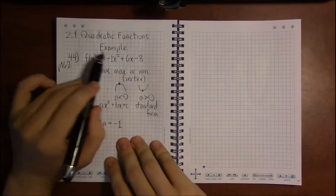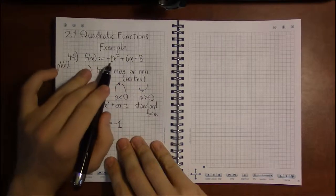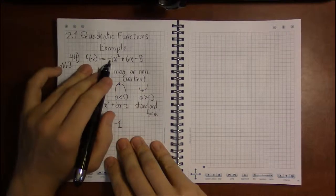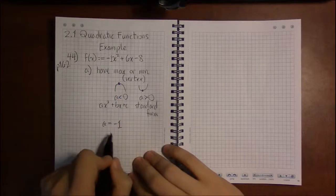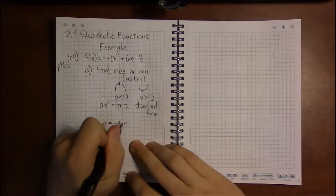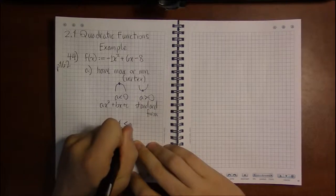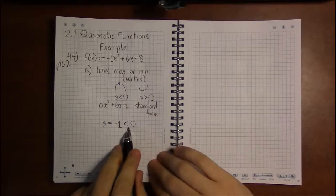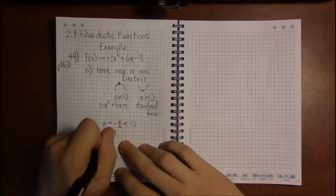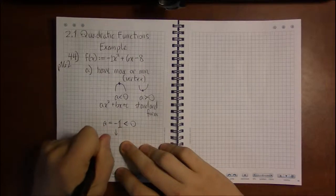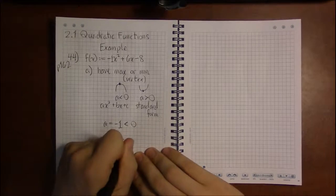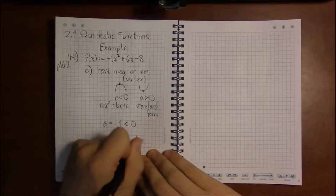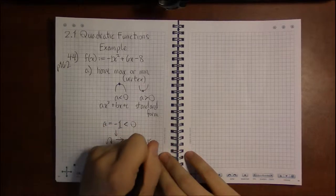Minus one times x squared, that's just complicated notation for minus x squared. In our case, our a in this problem is negative, it's less than zero, so the graph opens down which means the vertex is a max.